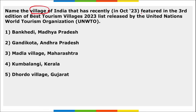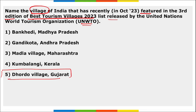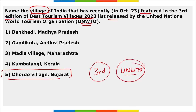The village of India that recently featured on the third edition of the Best Tourism Village 2023 list released by UNWTO is Dhodho village in Gujarat, named as the Best Tourism Village of 2023.